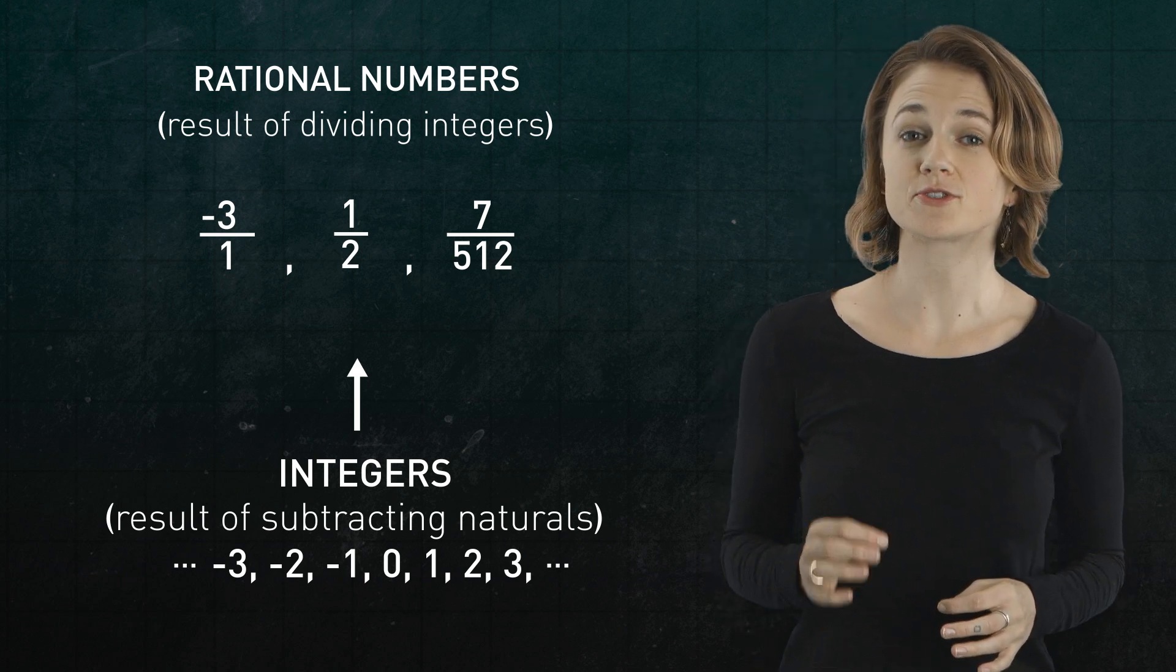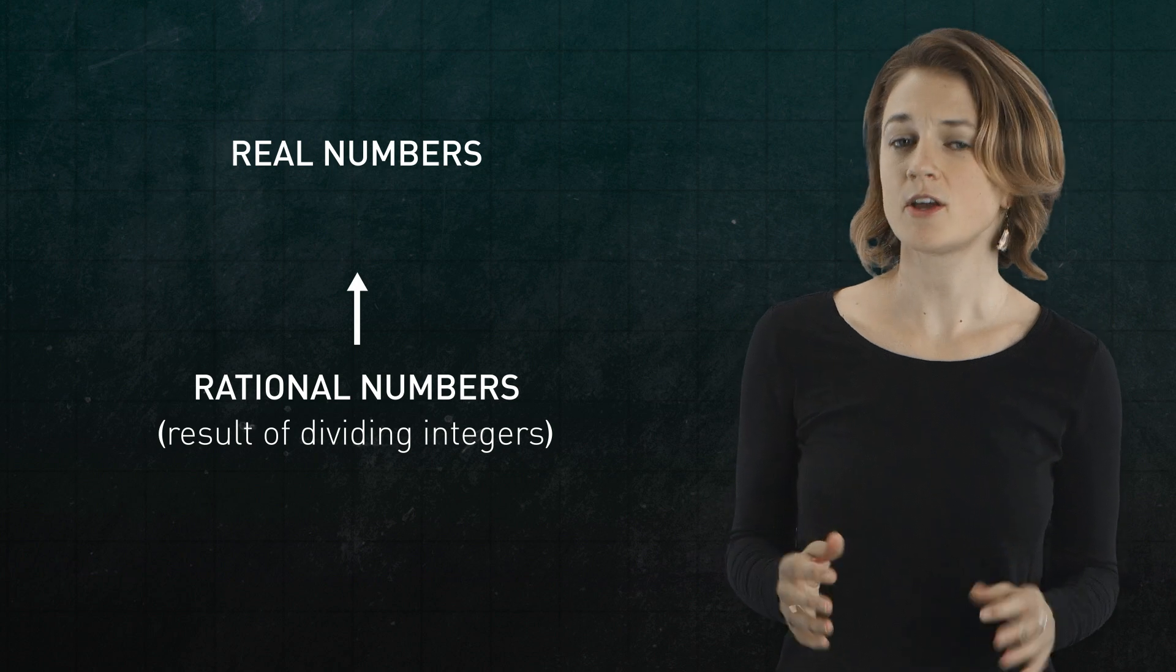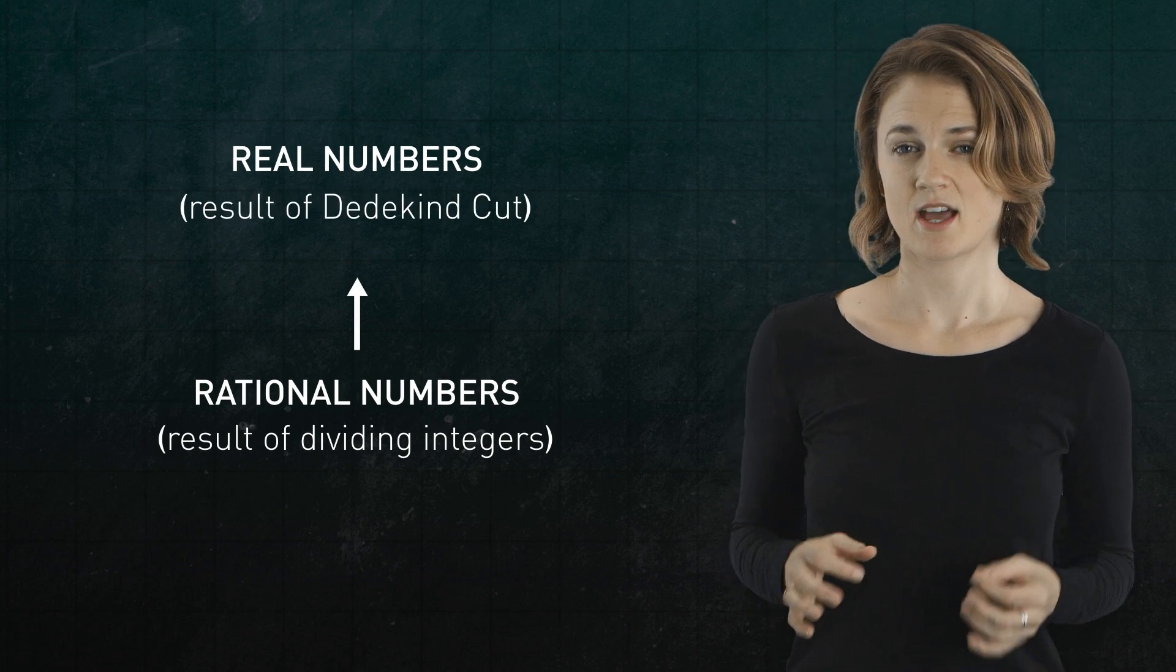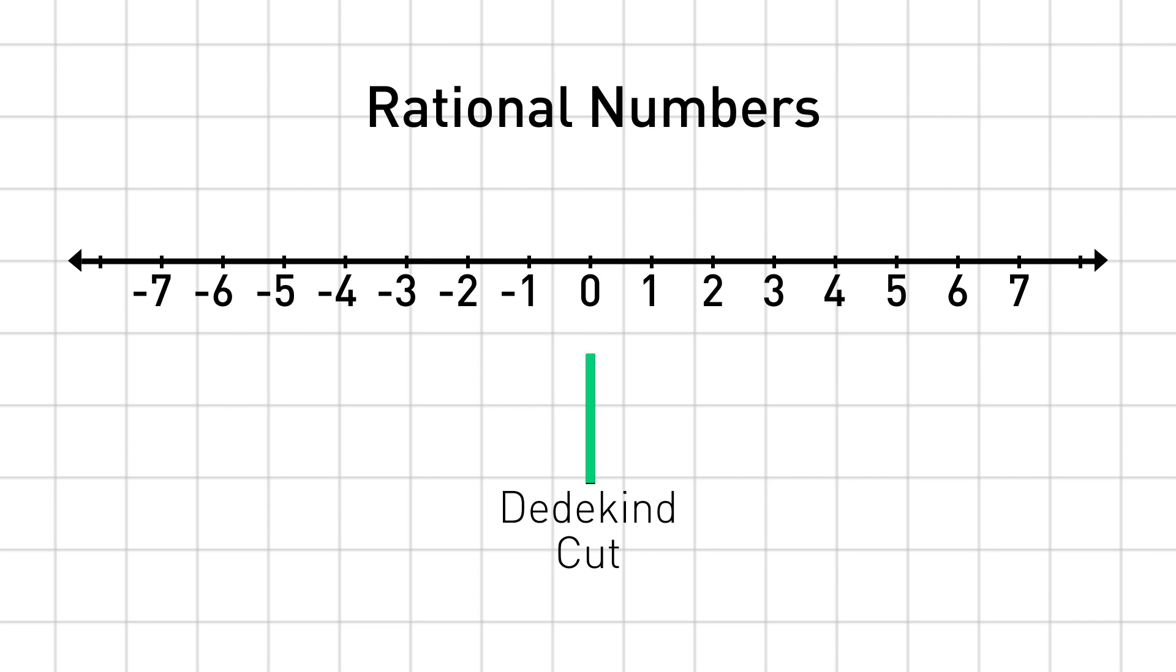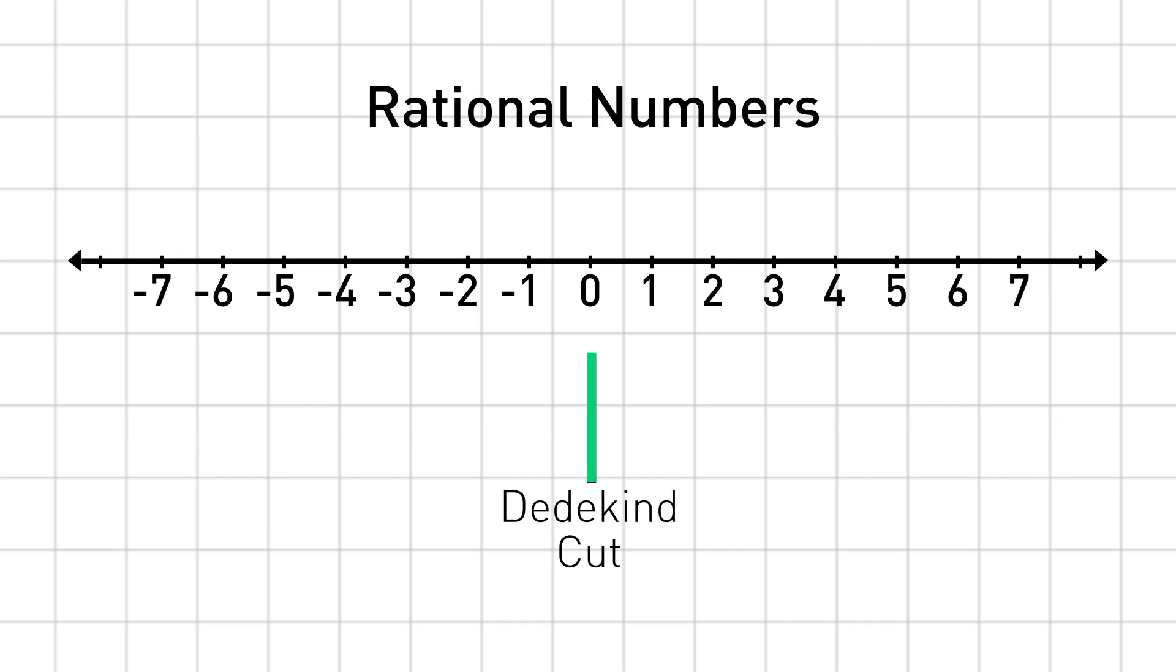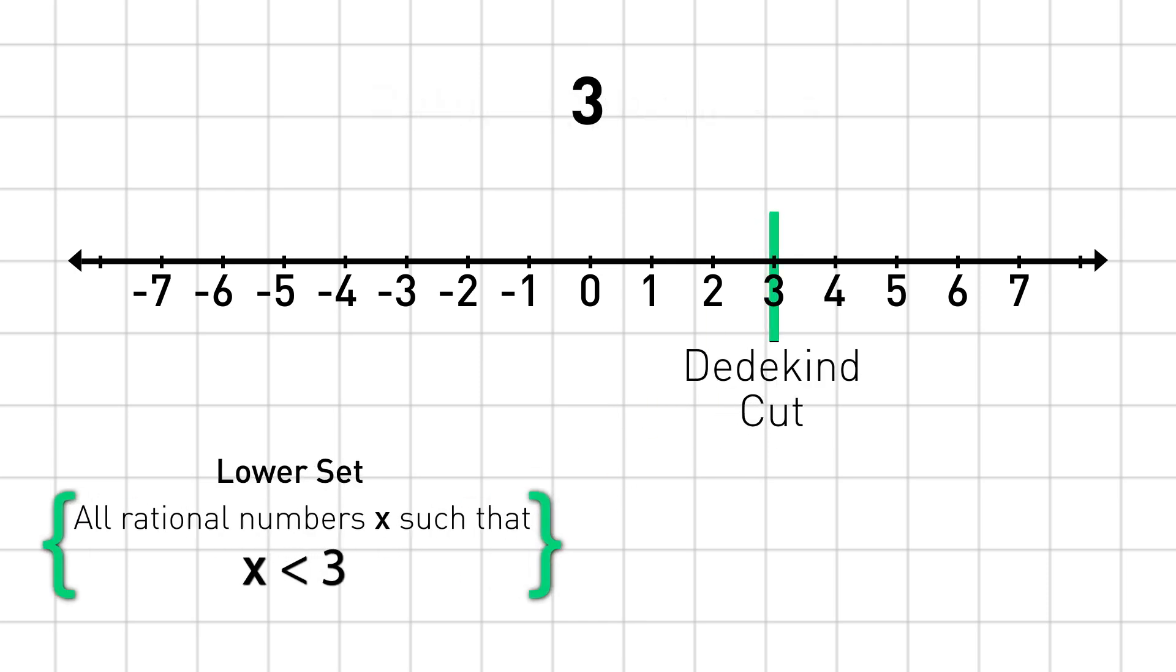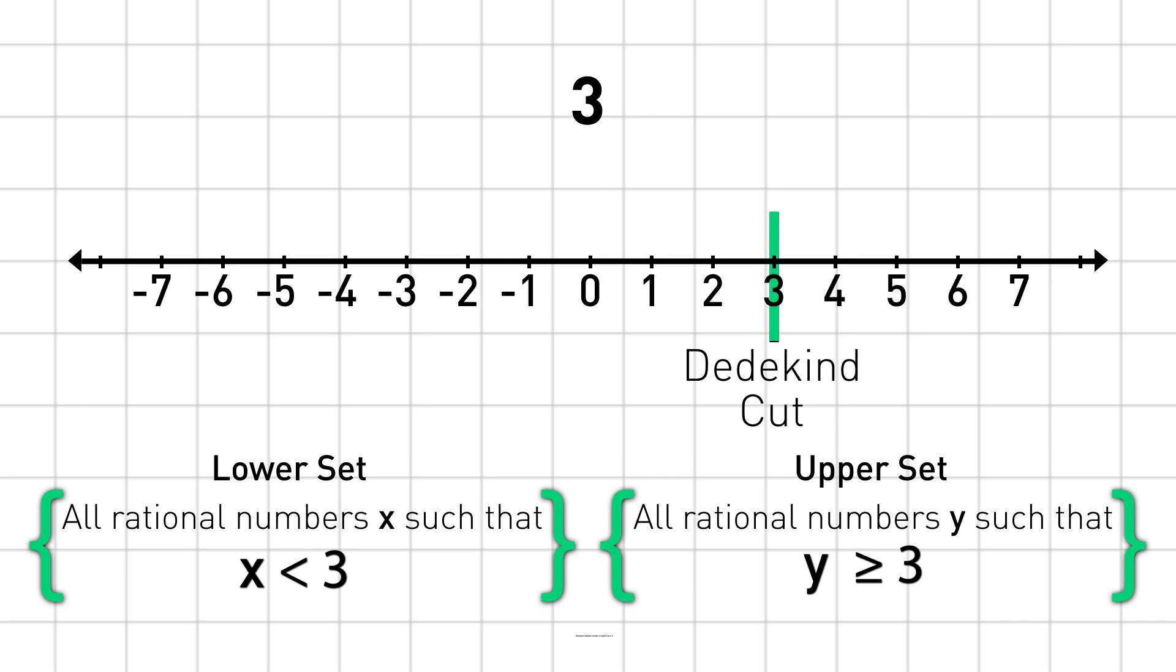One step further, we can also construct the real numbers from the rationals. But it's a bit more tricky, using something called a Dedekind cut. A Dedekind cut splits the rational numbers into two sets. One set is made up of all the rational numbers below the cut, and the other set is made up of all the rational numbers above or at the cut. Let's make the cut here. All the rational numbers less than three are in one set, and all the rational numbers greater than or equal to three are in another set. This cut, or way of splitting the rationals, is identified with the smallest rational number in the upper set, which is three. The cut defines the real number three. Notice that the lower set doesn't have a biggest element. There's no rational number immediately below three.